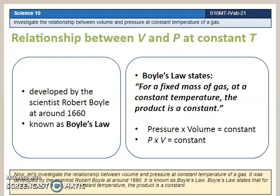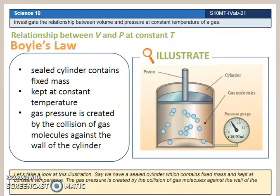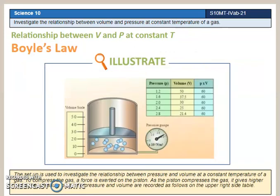Boyle's Law states that for a fixed mass of gas, at a constant temperature, the product is a constant. Let's look at this illustration. Say we have a sealed cylinder which contains fixed mass and is kept at constant temperature.